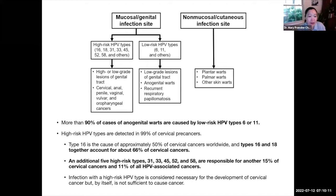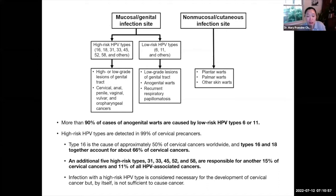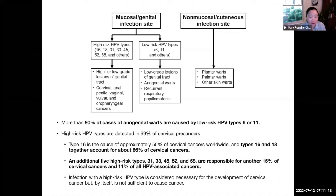The higher-risk HPV types are detected in 99% of cervical pre-cancers. Type 16 causes approximately 50% of cervical cancers worldwide, and together types 16 and 18 account for 66% of cervical cancers. The additional five high-risk types — 31, 33, 45, 52, and 58 — are responsible for another 15% of cervical cancers and 11% of all HPV-associated cancers. It's important to note that while infection with a high-risk HPV type is considered necessary for the development of cervical cancer, it is by itself not sufficient to cause cancer.